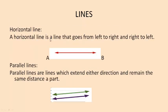Horizontal lines: A horizontal line is a line that goes from left to right and right to left. Here this line is horizontal line. AB horizontal line.